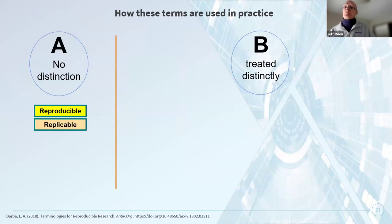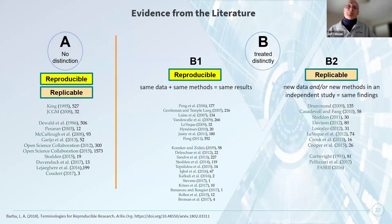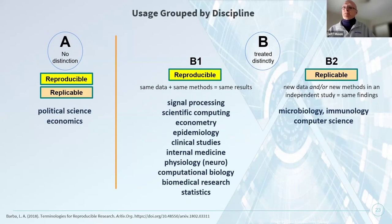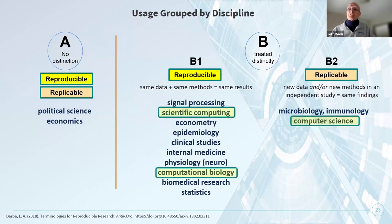It is interesting to note that these terms are used differently in practice, with some areas of research making no distinction between them and others treating them quite differently. A researcher named Barba in 2018 did a literature review to see how a sampling of scholarly articles made use of these terms, producing an interesting grouping by discipline. The majority of disciplines fall into the more rigorous reproducibility category, and notably scientific computing and computational biology landed in the reproducibility camp while computer science was in the replicability camp.